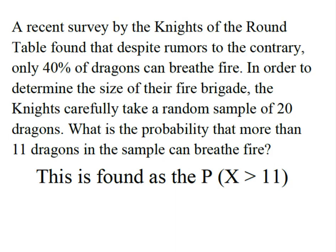So we have the hallmarks of a binomial distribution here. We know that 40% of dragons breathe fire, and so the other outcome is a 60% chance that they don't. We took a sample of 20, so our number of trials is 20.